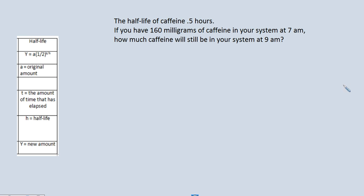And we got one more, half-life. Last one. Here we go. Half-life of caffeine is five hours. If you have 160 milligrams of caffeine in your system at 7 a.m., how much caffeine will still be in your system at 9 a.m.?